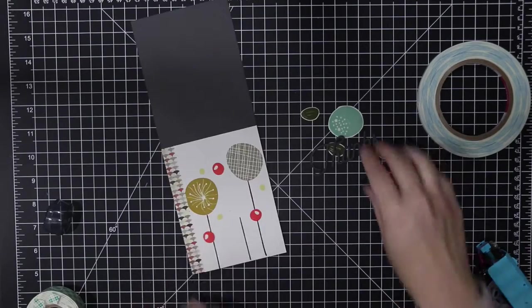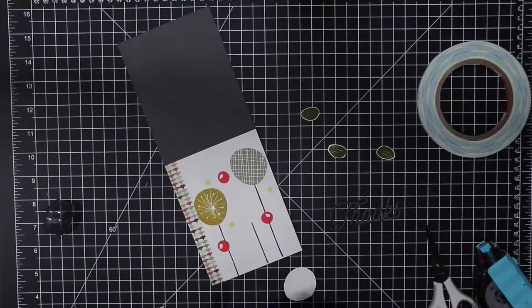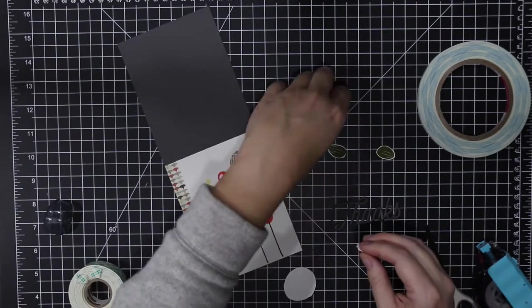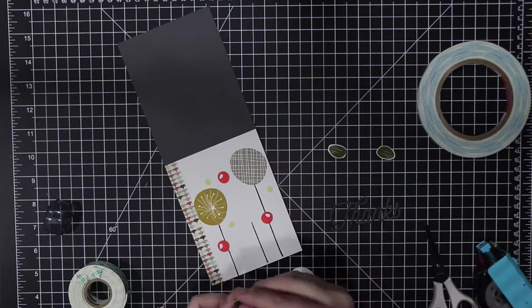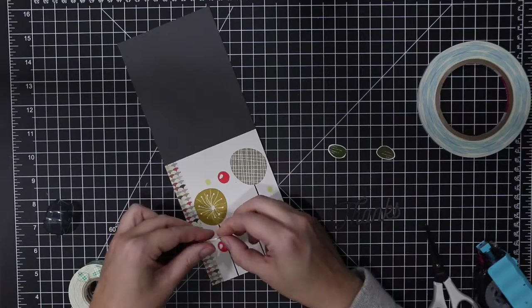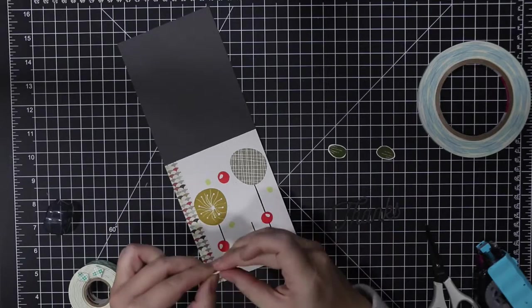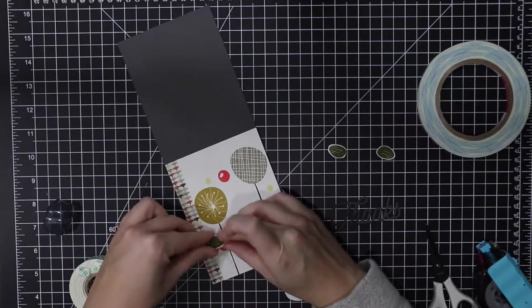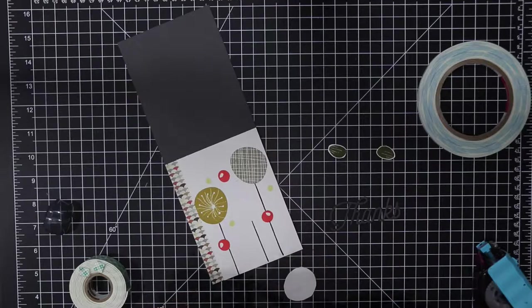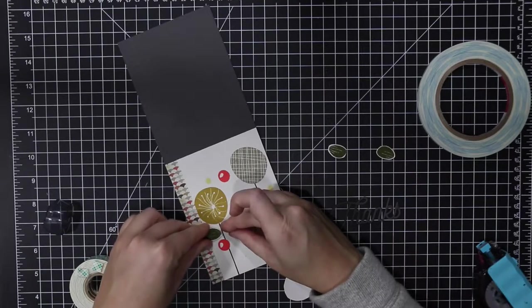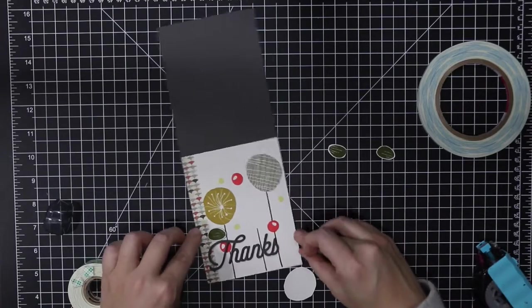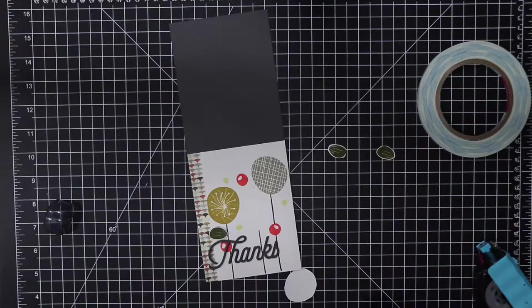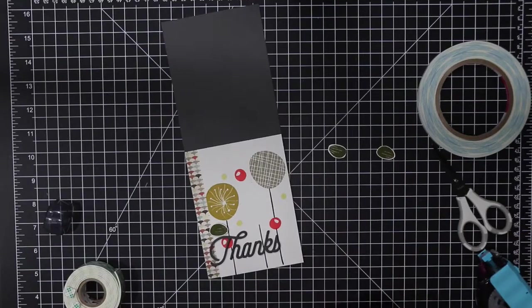Now I'm just arranging the elements. I had originally planned to pop up all of those leaves with foam tape, but the way that it's finished, you can't pop it up or it'll get in the way. So I popped up this one leaf and now I'm gonna adhere the other two flat so that they're not in the way of the other elements.